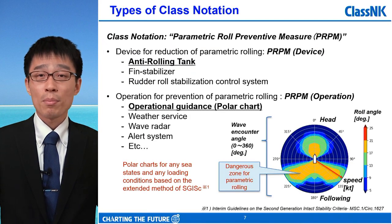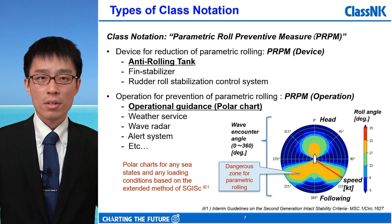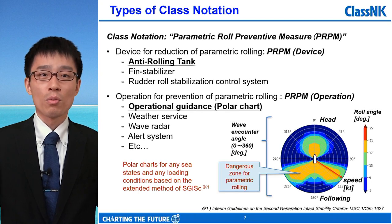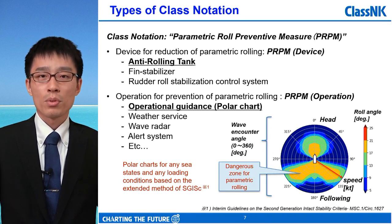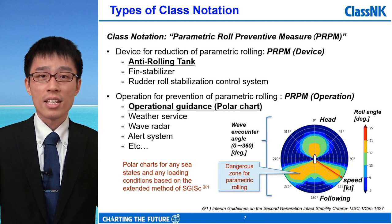These are examples of class notation to assist with parametric roll preventing measures. For example, devices for reduction of parametric rolling such as anti-rolling tanks, fin stabilizers, rudder roll stabilization control systems, and operational guidance including polar charts, weather services, wave radar, and alert systems monitoring roll data. In this polar chart example, the radial direction is the ship speed, zero degrees is fixed at head sea, and the contours are drawn at the maximum roll angle.